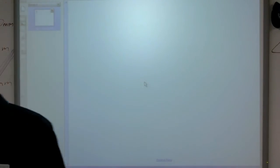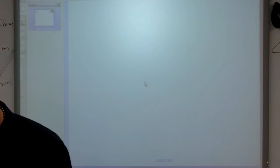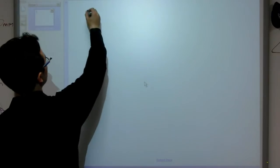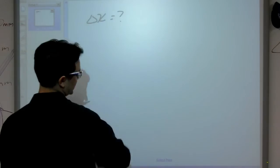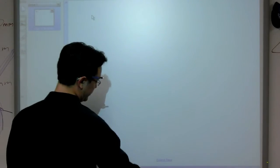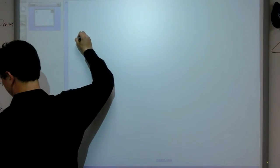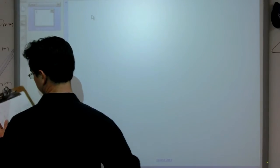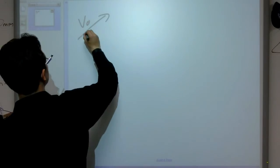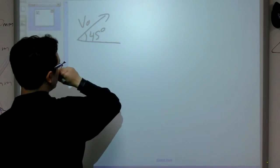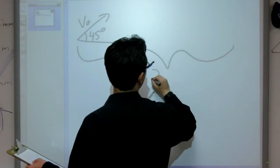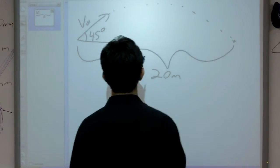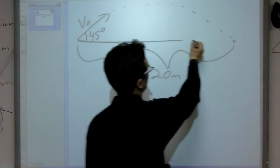We're going to do yet another projectile motion problem. This one is probably going to be a much more difficult one, because normally up to this point I've asked you for things like how far away something is — so normally you're looking for the delta x. That's not what we're going to do this time. I'm going to tell you that I'm throwing a ball at some velocity, v-naught, at 45 degrees above the horizontal, and it ends up going 20 meters away and landing over here. This is near the surface of the earth, on flat level ground.